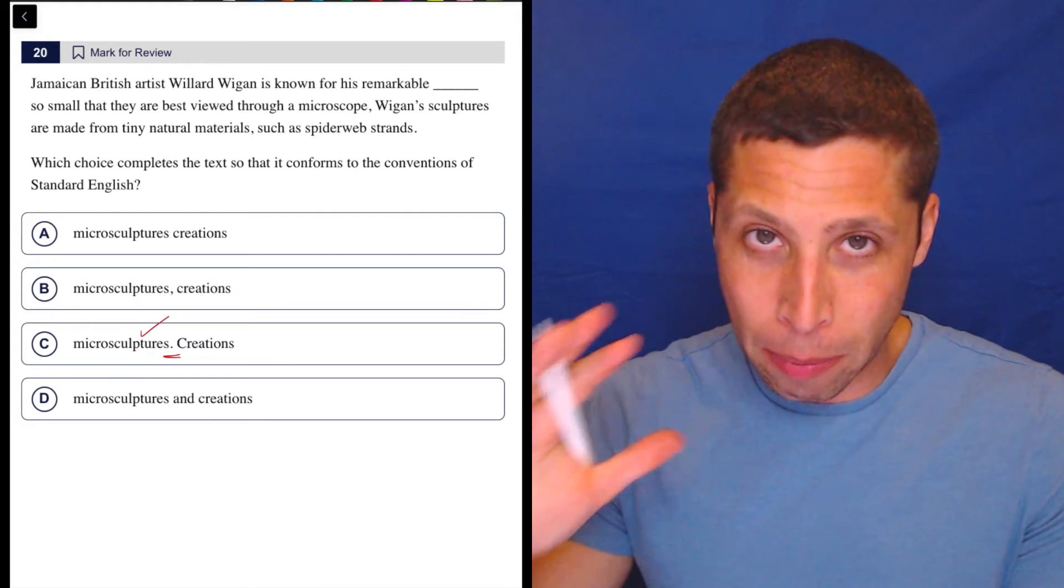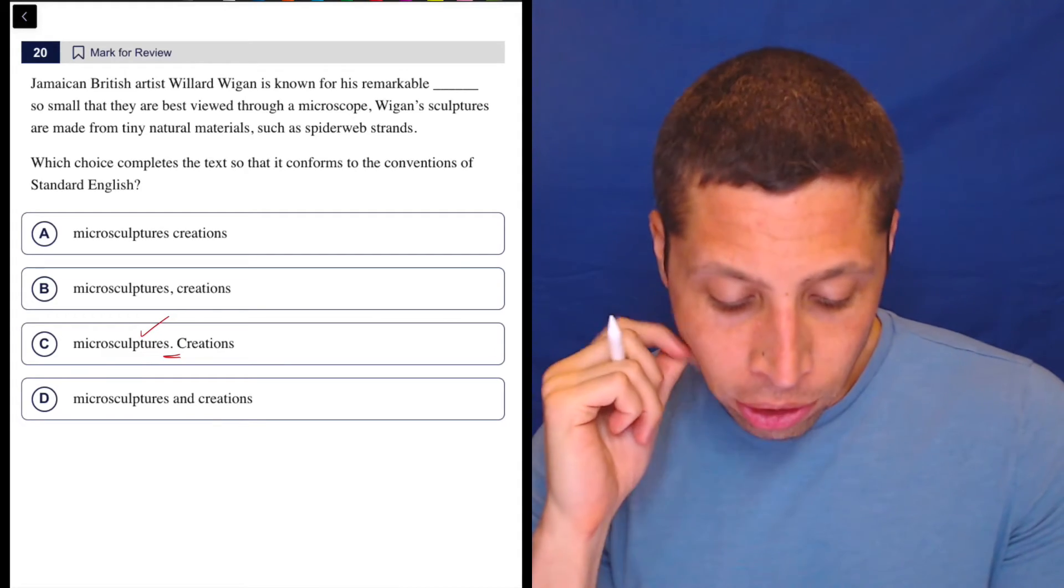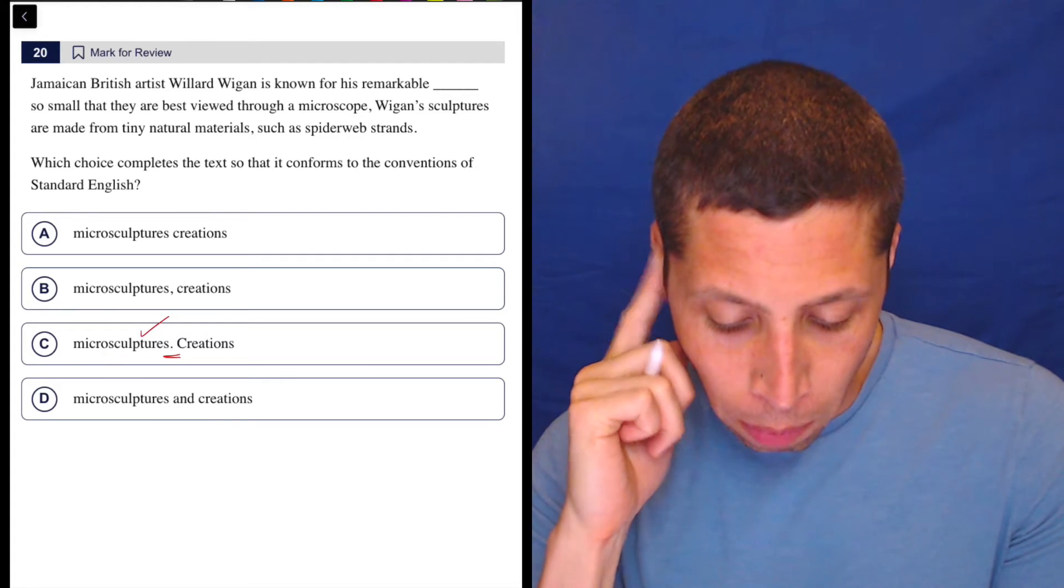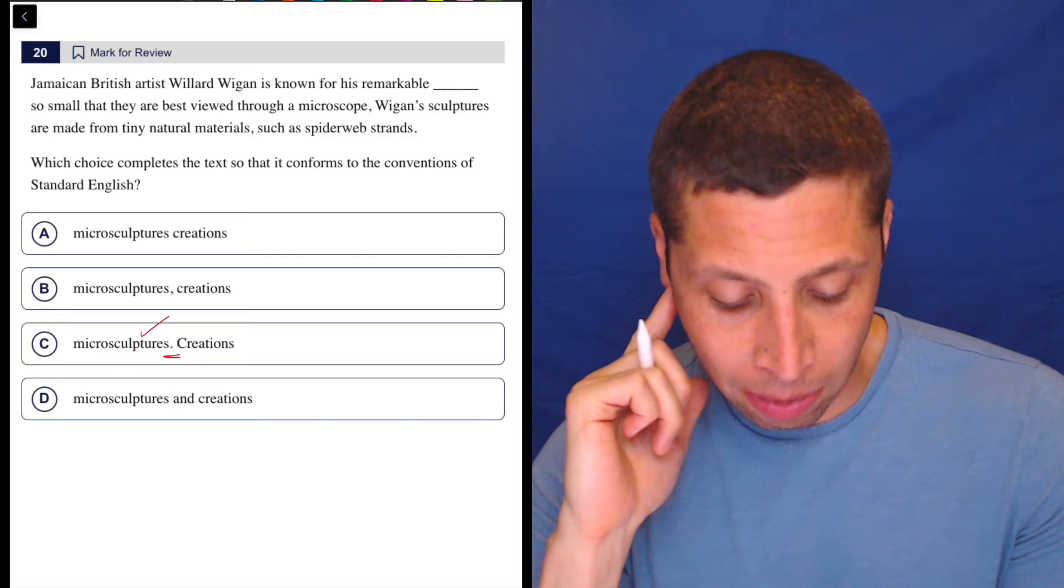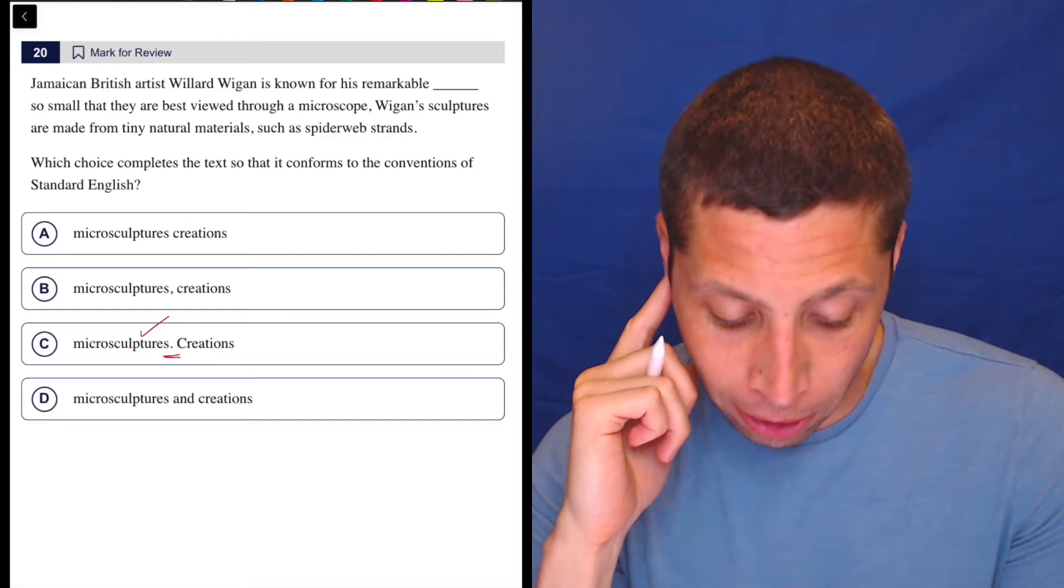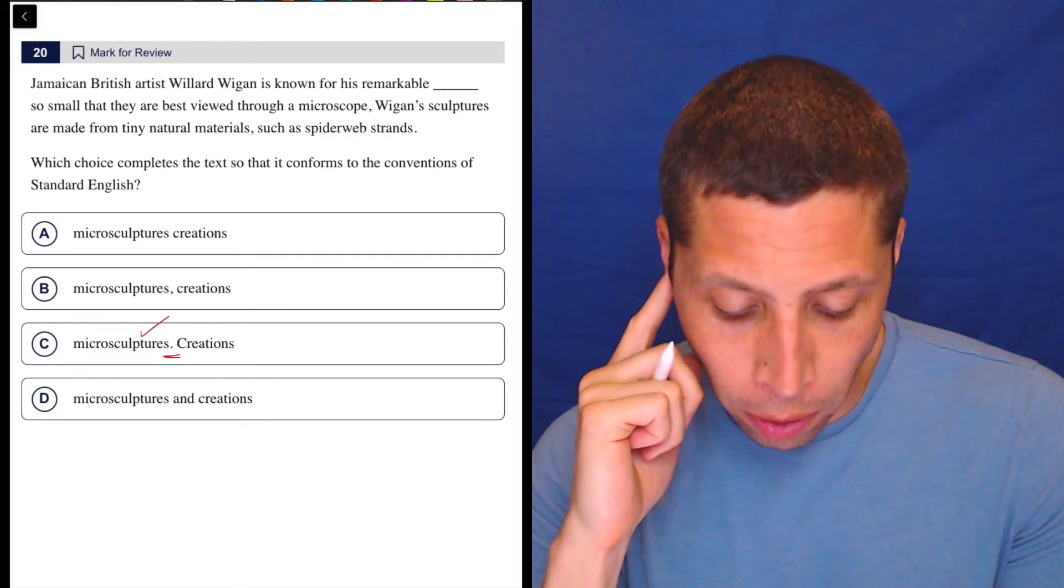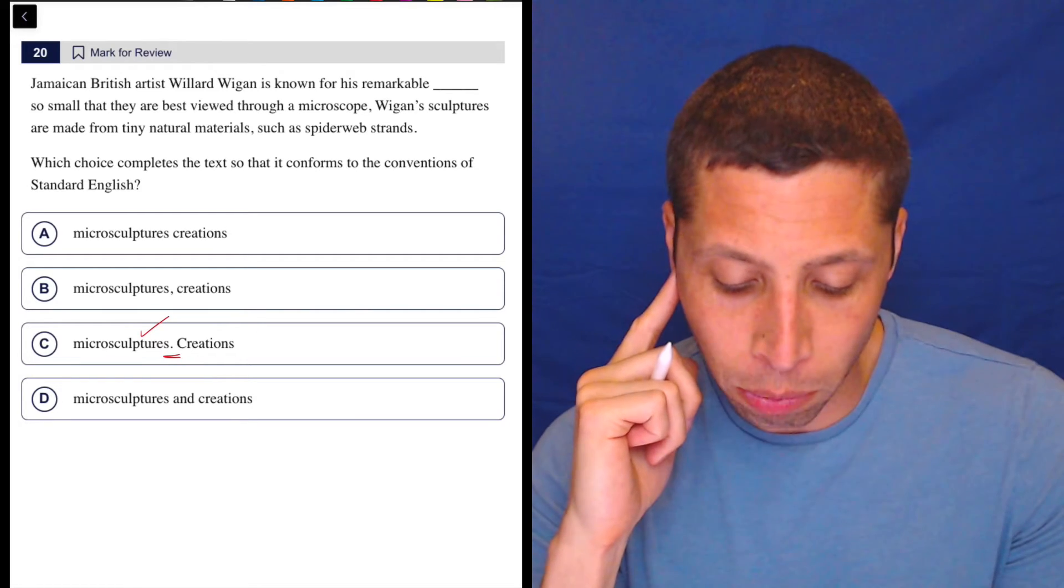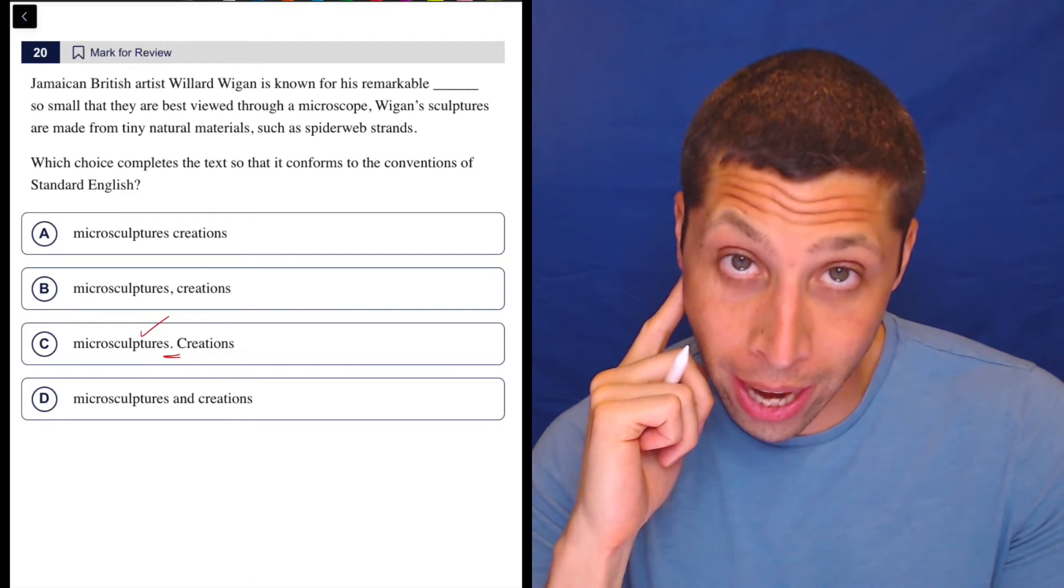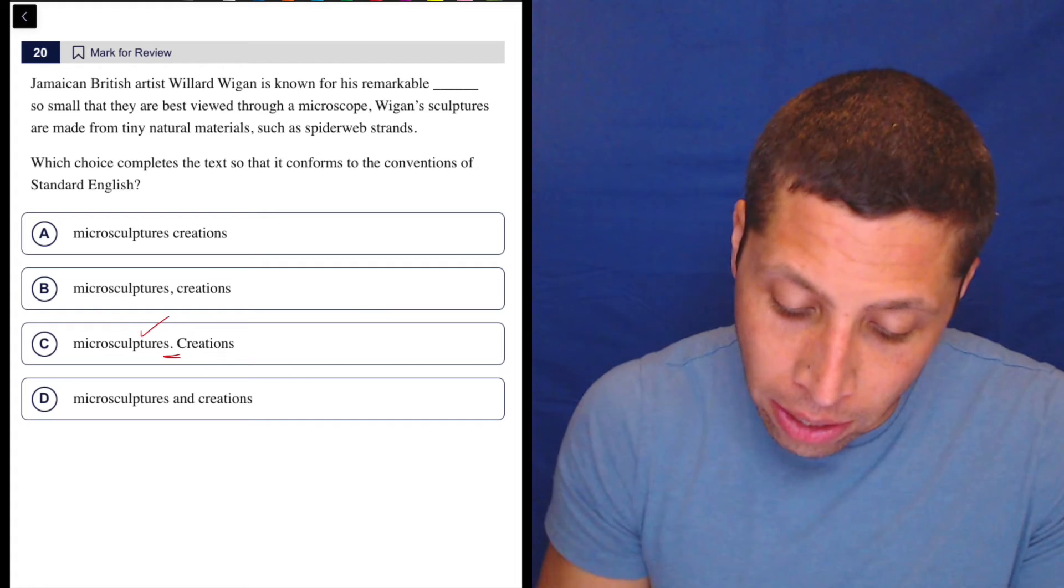Now let's continue. What do we have next? We're going to think about the punctuation. Creations so small that they are best viewed through a microscope. Well, that's a description. It's talking about some creations. We got a comma here. Creations so small that they are best viewed through a microscope. Wiggin sculptures are made from tiny natural materials such as spiderweb strands. Well, there we go. We have another sentence.